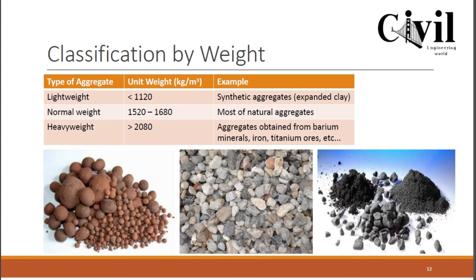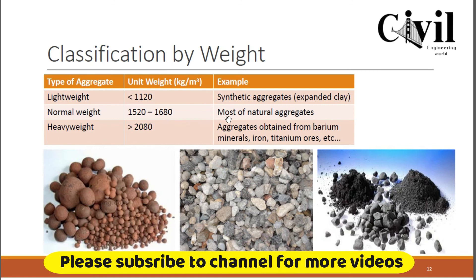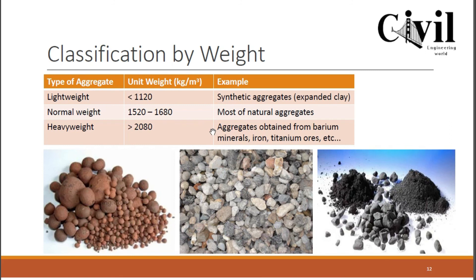The second type is normal weight aggregates — those commonly used in construction. The unit weight of these aggregates varies between 1520 to 1680 kg per cubic meter. Most natural aggregates used in building construction fall into this category.